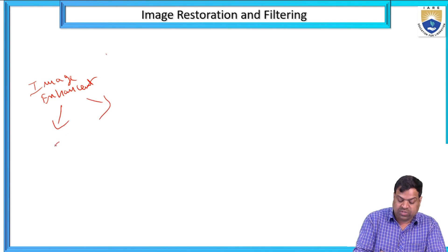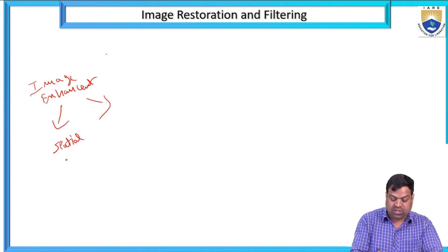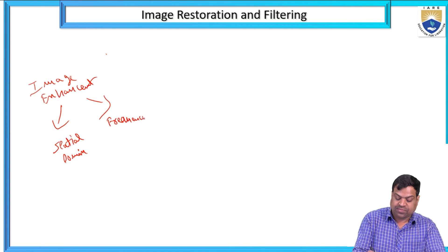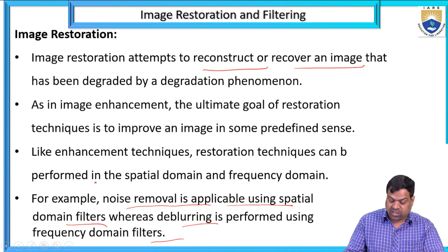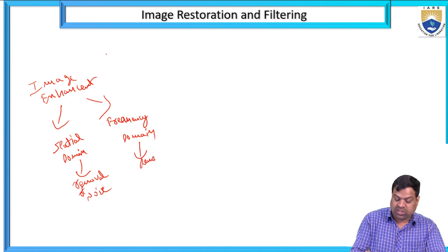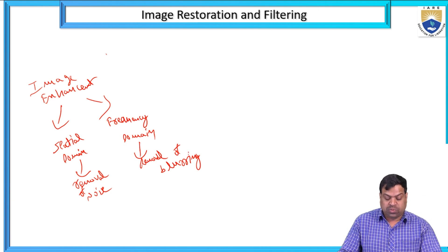Image enhancement techniques are two types: spatial domain and frequency domain. Spatial domain is used for removal of noise, while frequency domain is used for removal of blurring. These are the two processes of image enhancement.